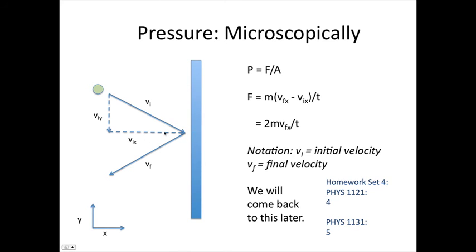In the horizontal direction, the velocity is changing. The initial velocity is in the opposite direction to the final velocity. They have the same magnitude, but the opposite direction. So vfx is equal to minus vix. So if we replace this vix with a minus vfx, we'll end up with 2m vfx over t. So this is the force that one particle exerts on the wall.